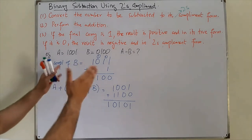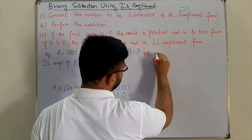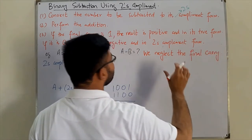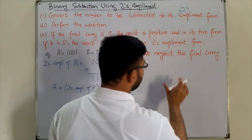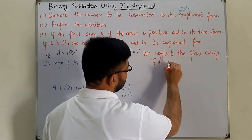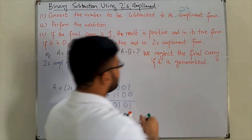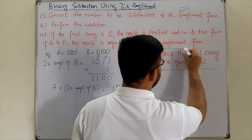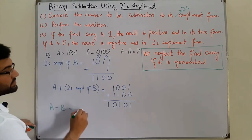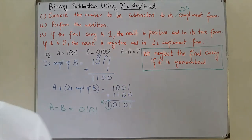For the two's complement method, it is very important to remember: we neglect the final carry if it is generated. Since we have a final carry here, we neglect it, and the answer to A minus B is 0101. That carry is discarded.